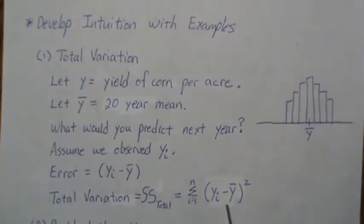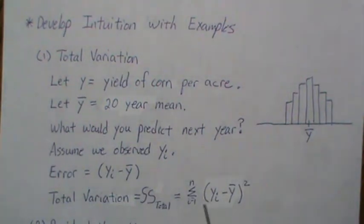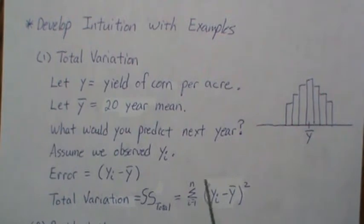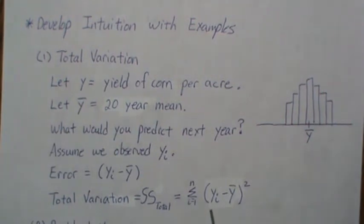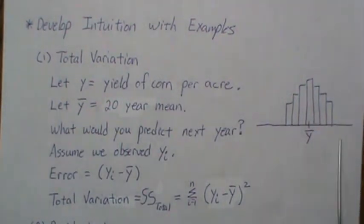Many of you will notice that if we divide this by N minus one, that is the sample variance — an estimate of the variance of our data set. So this is a legitimate measure of the total variability in our data; it kind of captures the range.